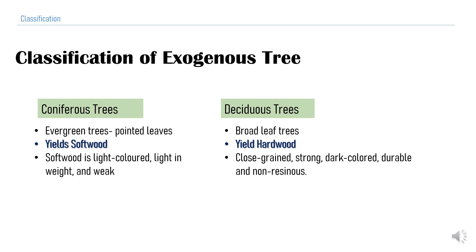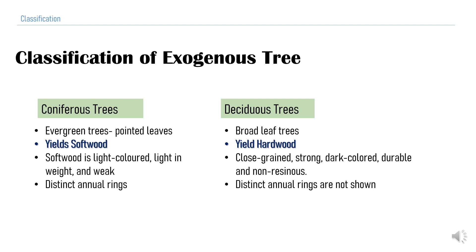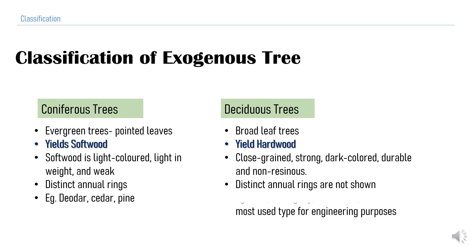Coniferous softwood is light in color, so the annual rings are visible distinctly. But in the case of deciduous trees, as they are dark in color, the annual rings are not seen distinctly. Examples of coniferous trees are deodar, cedar, and pine. Examples of deciduous trees are teak, mahogany, shisham, and oak, which are most commonly used for engineering purposes.